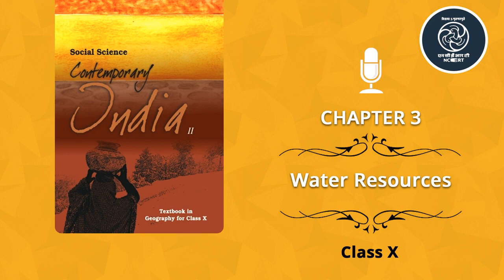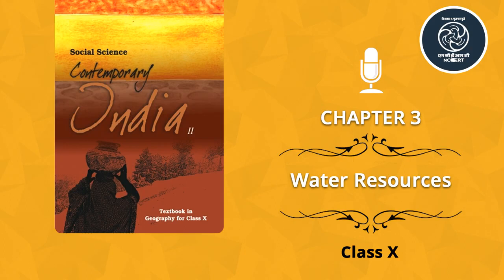Question 2: Answer the following questions in about 30 words. 1. Explain how water becomes a renewable resource. 2. What is water scarcity and what are its main causes? 3. Compare the advantages and disadvantages of multipurpose river projects. Question 3: Answer the following questions in about 120 words. 1. Discuss how rainwater harvesting in semi-arid regions of Rajasthan is carried out. 2. Describe how modern adaptations of traditional rainwater harvesting methods are being carried out to conserve and store water.